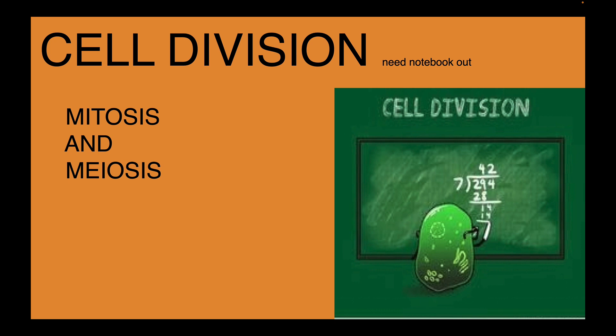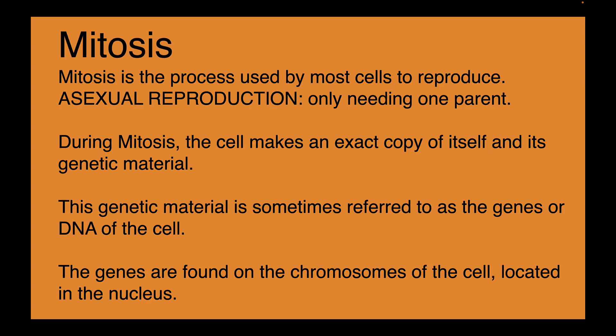Cell division is really what we're talking about here. Mitotic cell division is used by most cells to reproduce — different types of cells like muscle cells, bone cells, and so on. Asexual reproduction doesn't need more than one parent for mitotic division to occur. Organisms like amoebas reproduce this way. During mitosis, a cell makes an exact copy of itself and its genetic material, sometimes referred to as the genes or DNA.